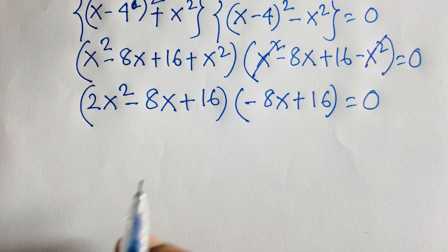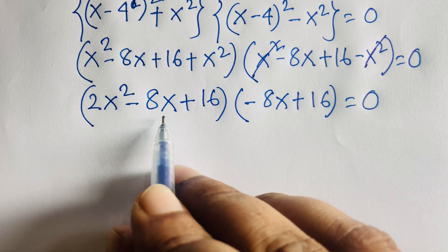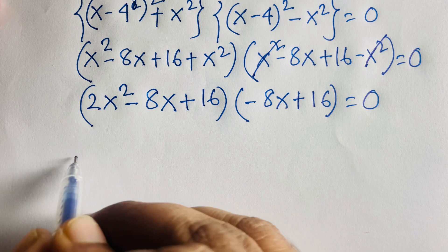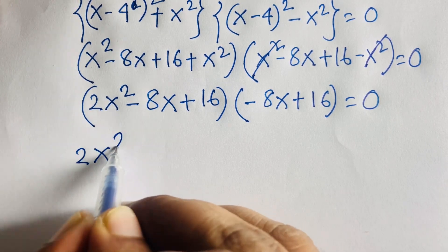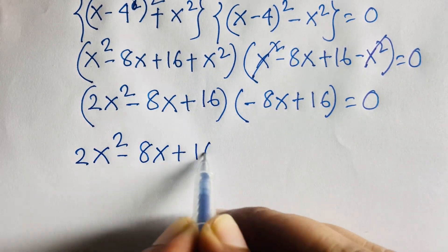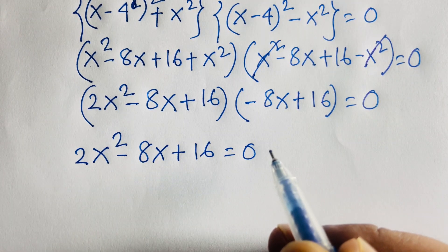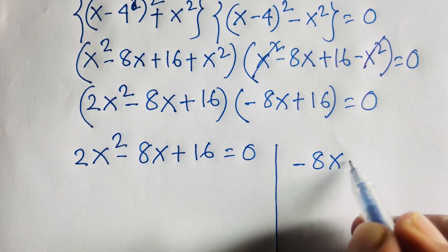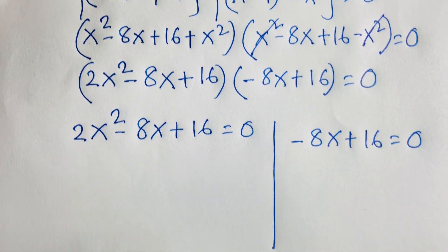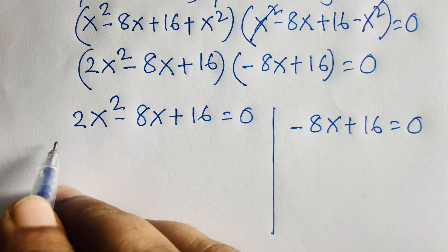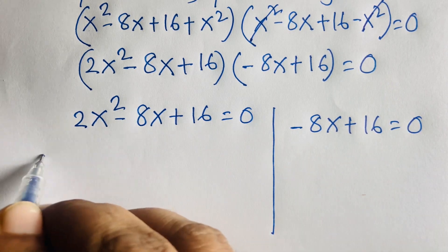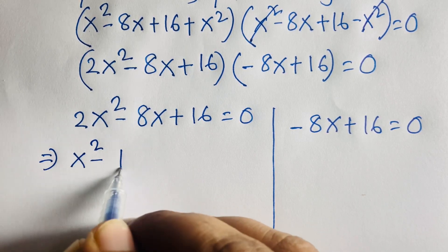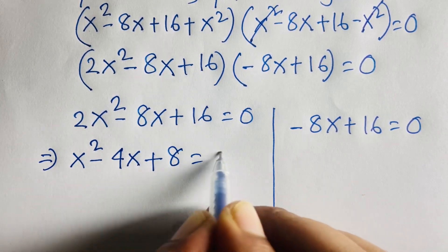We have two factors, so either factor can equal zero. Case 1: 2x² minus 8x plus 16 equals 0. Case 2: minus 8x plus 16 equals 0. Dividing Case 1 by 2 gives x² minus 4x plus 8 equals 0.